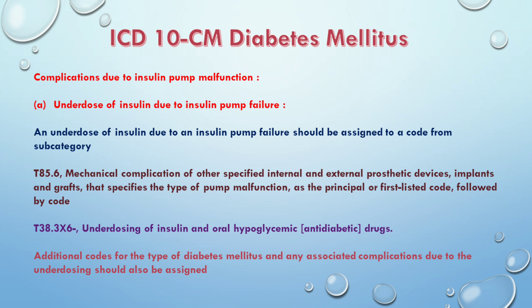First of all, there are two types of complications of insulin pump malfunctions. The first one is Underdose and the second one is Overdose. So, first of all, let's discuss the underdose of insulin due to insulin pump failure.